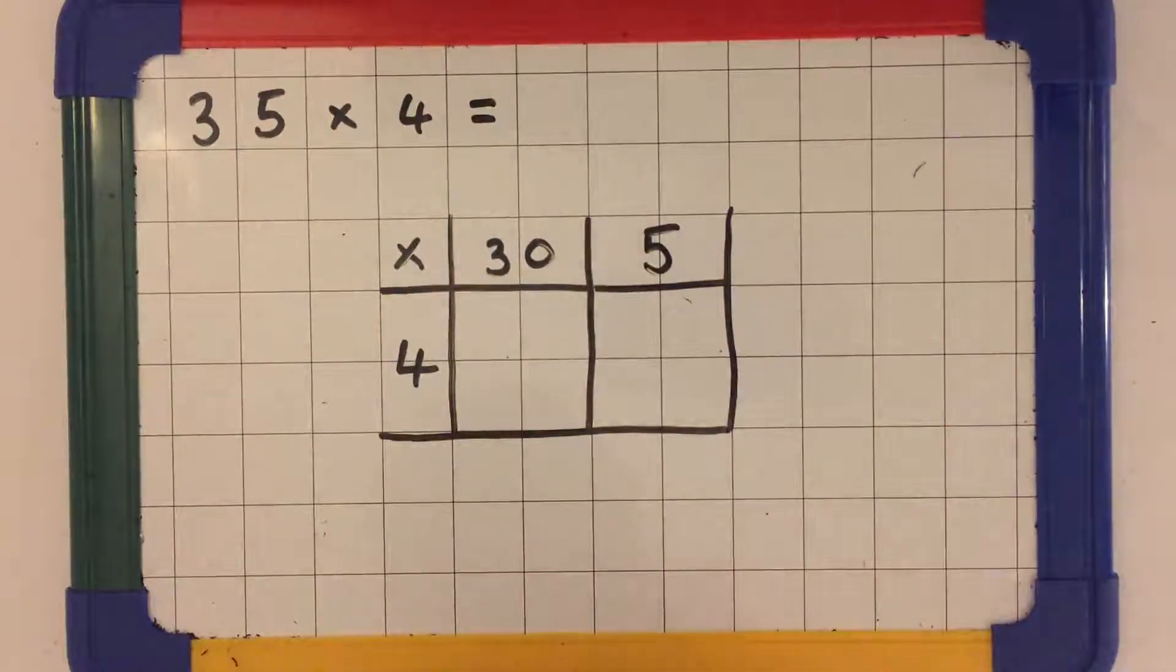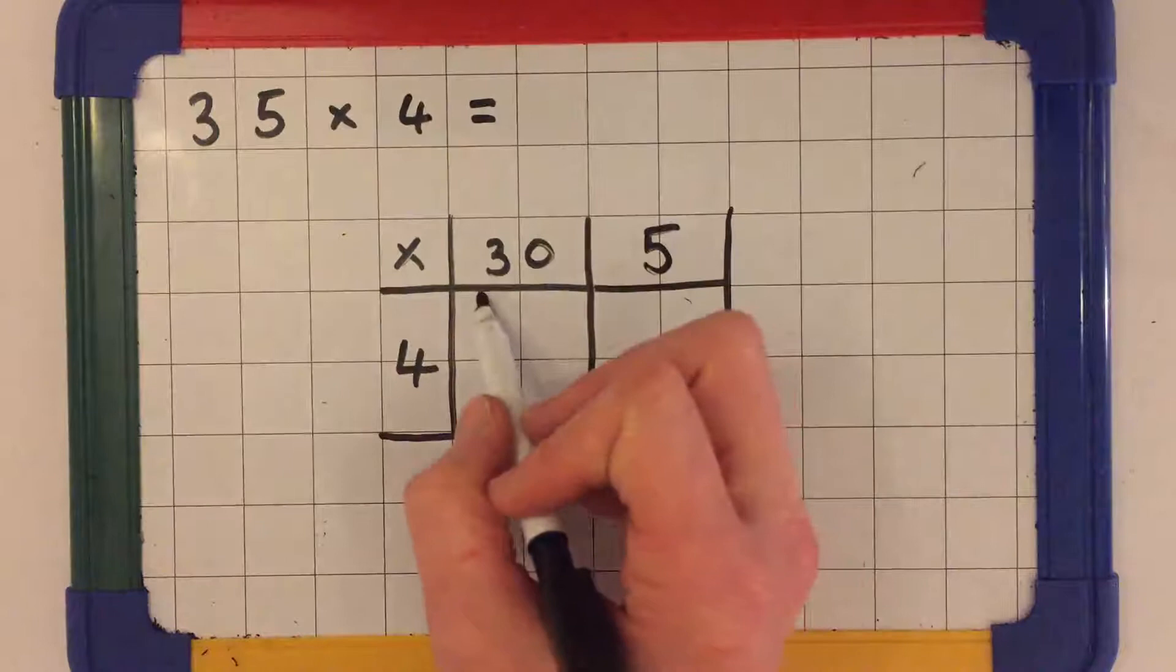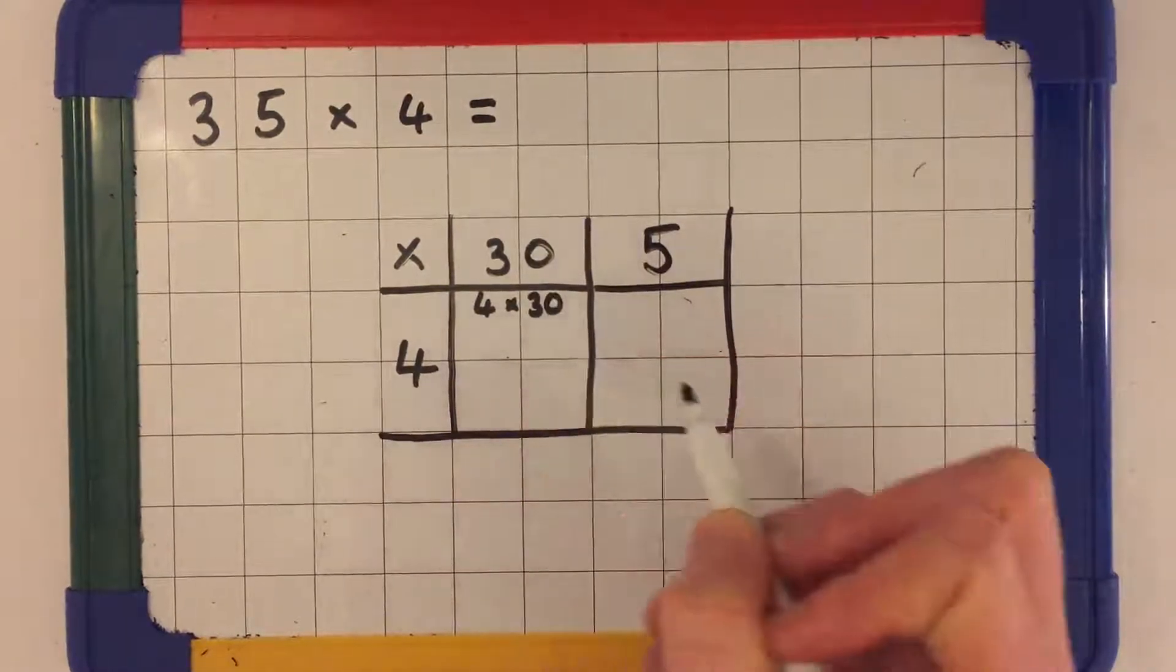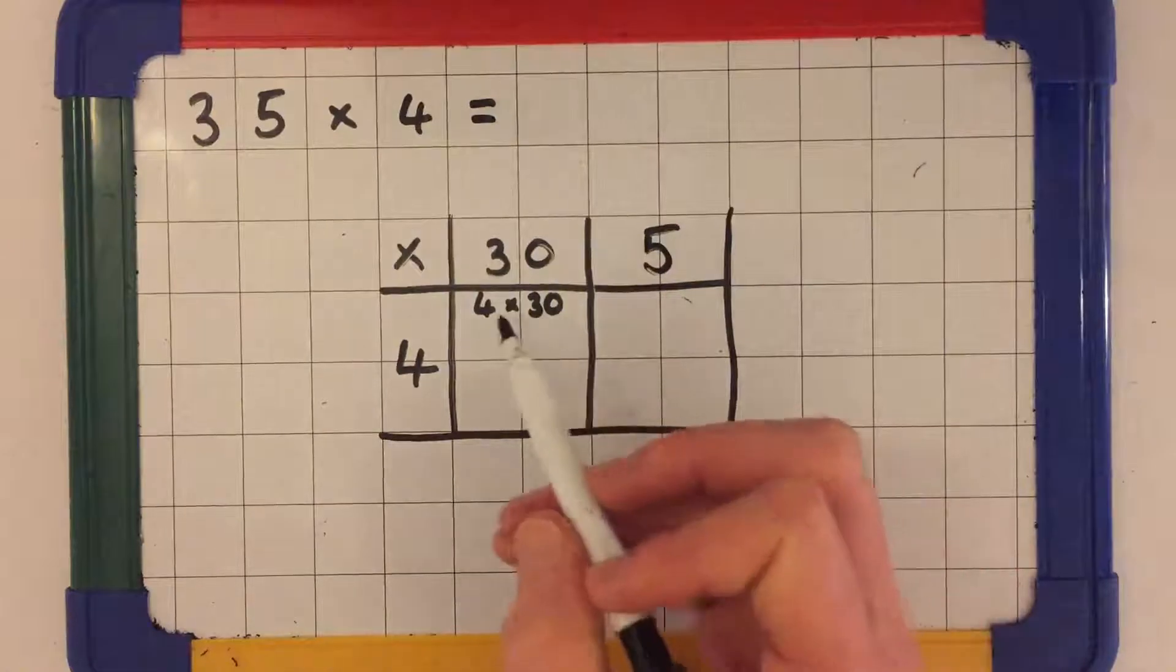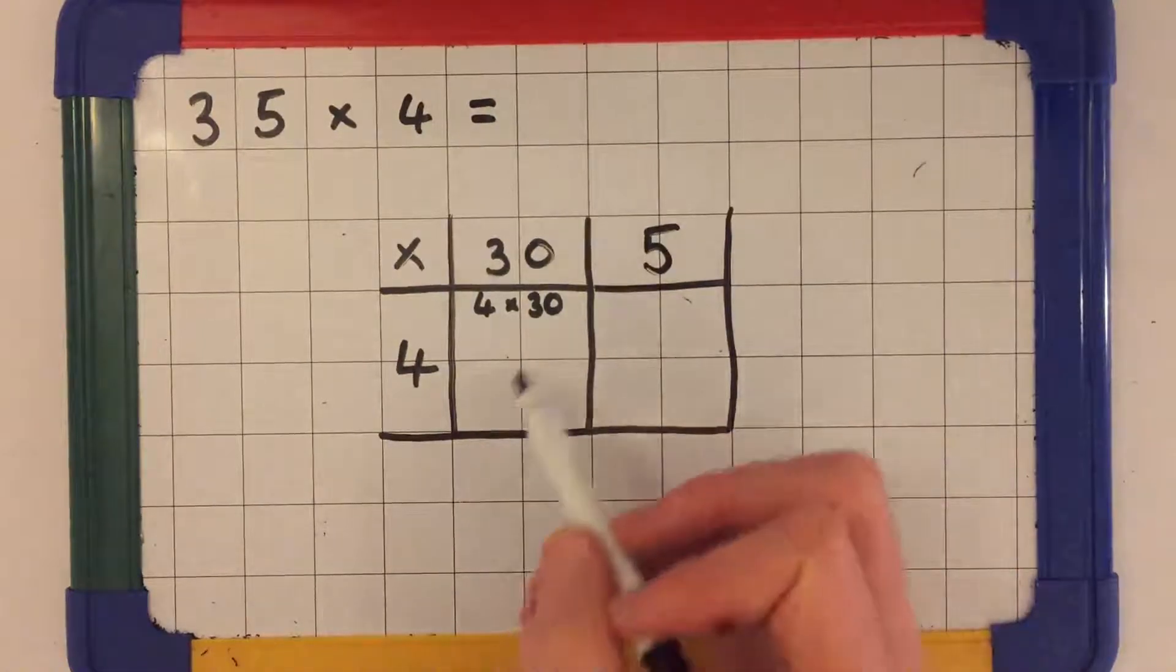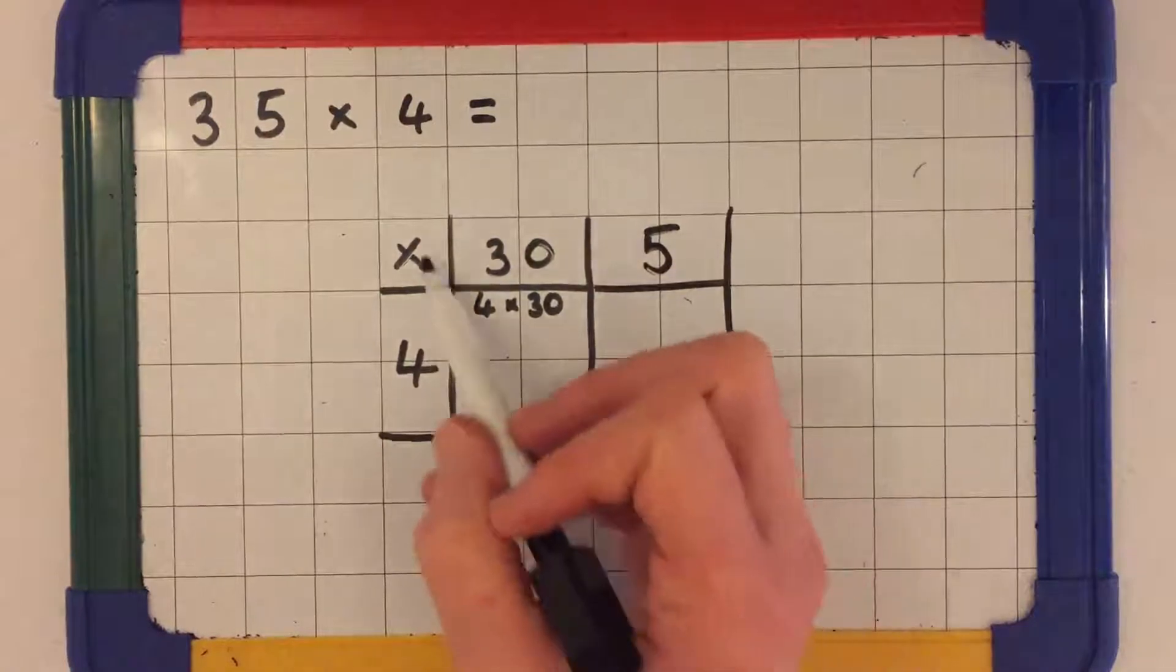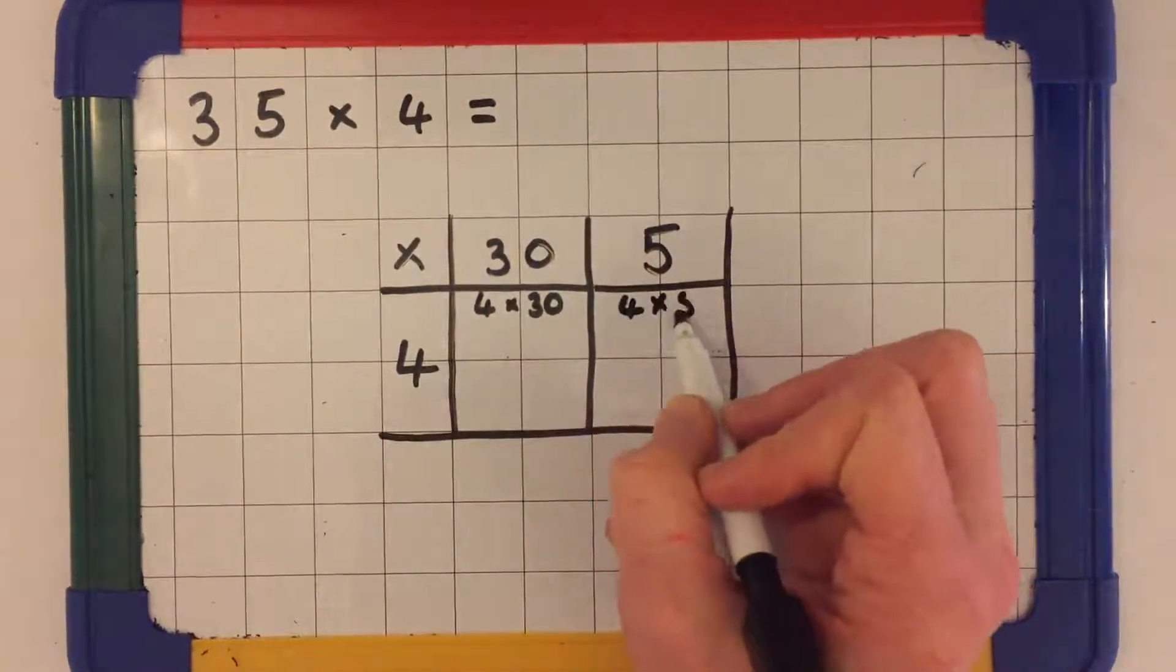We're good to start solving. You can write at the top of each box the multiplication you're going to solve. So in this box we're going to solve 4 times 30. Then in the other box we're going to solve 4 times 5.